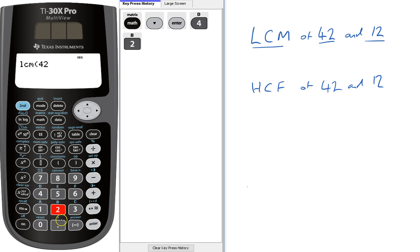And then I have to put the comma. The comma's here, so it's in blue, so it's second comma, and then 12. And that will say the lowest common multiple is 84.